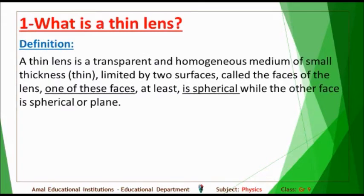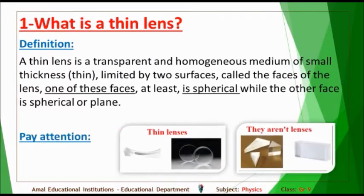What is a thin lens? By definition, a thin lens is a transparent and homogeneous medium of small thickness limited by two surfaces called the faces of the lens. One of these faces at least is spherical, while the other face is spherical or a plane. Note: the first figure represents thin lenses, the other does not, because in the second figure they don't have at least one spherical face.